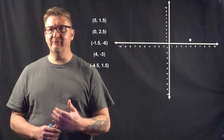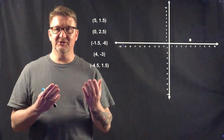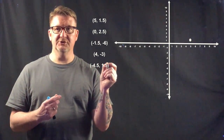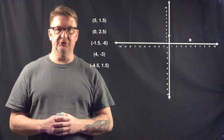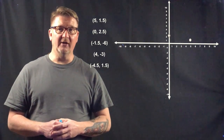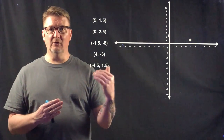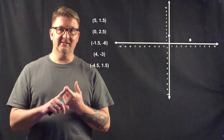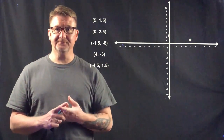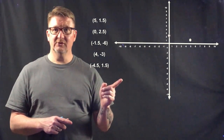We do the same thing for the other points — we just repeat the steps. For (0, 2.5), since 0 is your x-coordinate, it doesn't go anywhere; it just stays right there at the origin, and then we go up 2.5 for the y-coordinate. The next coordinate is (-1.5, -6). Because the x is negative, we go to the left. The y-coordinate is also negative, so that means we go down. So (-1.5, -6) goes there.